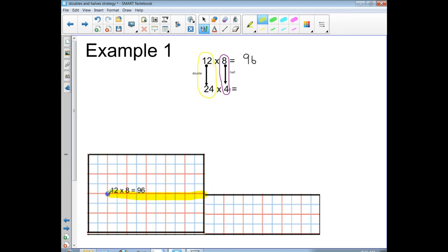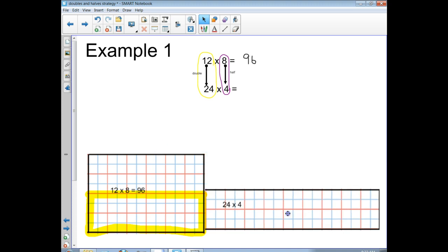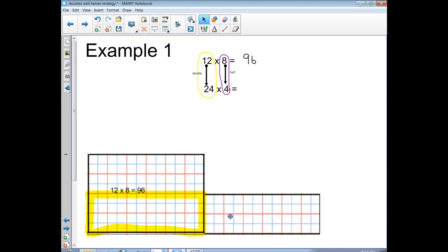So this part right here is lined up exactly even with the array that's on the bottom, the 12 times the 4. So let's see what do we have left over. So let me draw a line, a green line around this part.